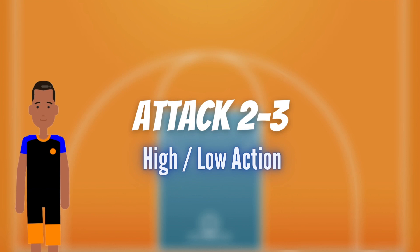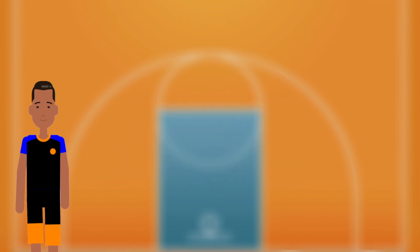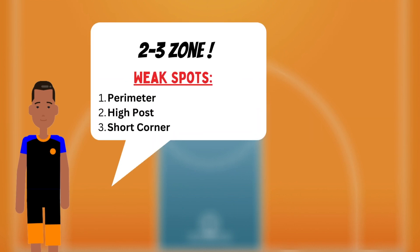2-3 zone is a defense that slows down the tempo of the game, attempting to prevent the offense from penetrating the lane or the key. This defense presents a few weak spots: the perimeter, the high post, and the short corner.